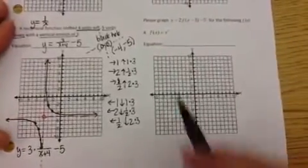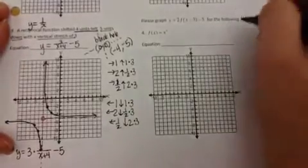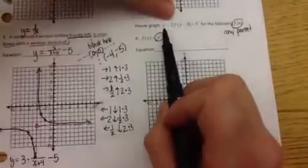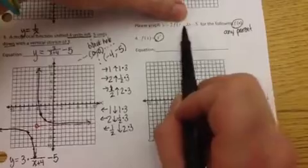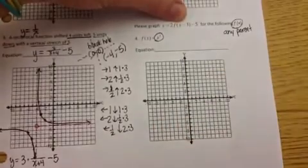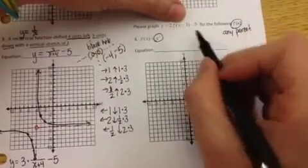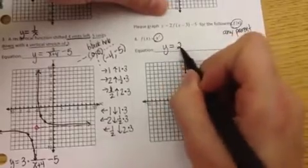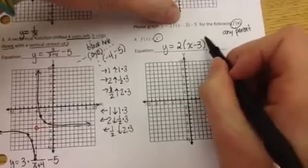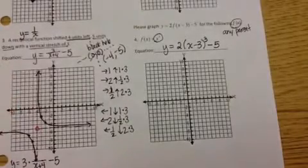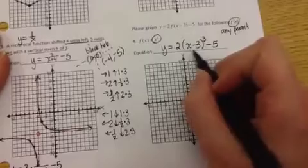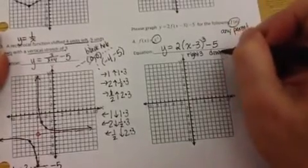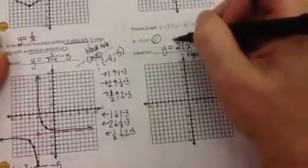Last problem: we're going to do this for the following f of x. Remember, f of x represents any parent function. In this case my parent is x cubed. So this equation tells me to do y equals 2 times the parent with subtracting 3 inside and subtracting 5 outside. The parent operation is cubing, so it will be y equals 2 times (x minus 3) cubed minus 5. The minus 3 inside shifts the function right 3, the minus 5 outside shifts it down 5, and the 2 out in front is a stretch of 2.